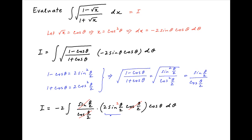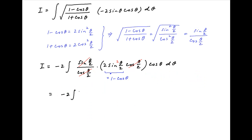Recall that 2 times sin squared theta upon 2 is equal to 1 minus cos theta. Therefore, I is equal to minus 2 times the integral of (1 minus cos theta) times cos theta d theta.